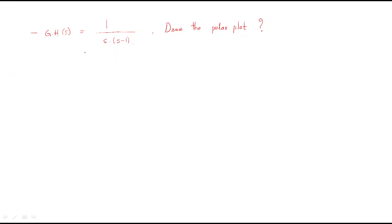In this session we will discuss the problem GH(s) = 1 / [s(s-1)]. You have to be careful here: this is the open-loop transfer function, but the pole s-1=0 means s=1, so the system is unstable — the pole is in the right-hand side.